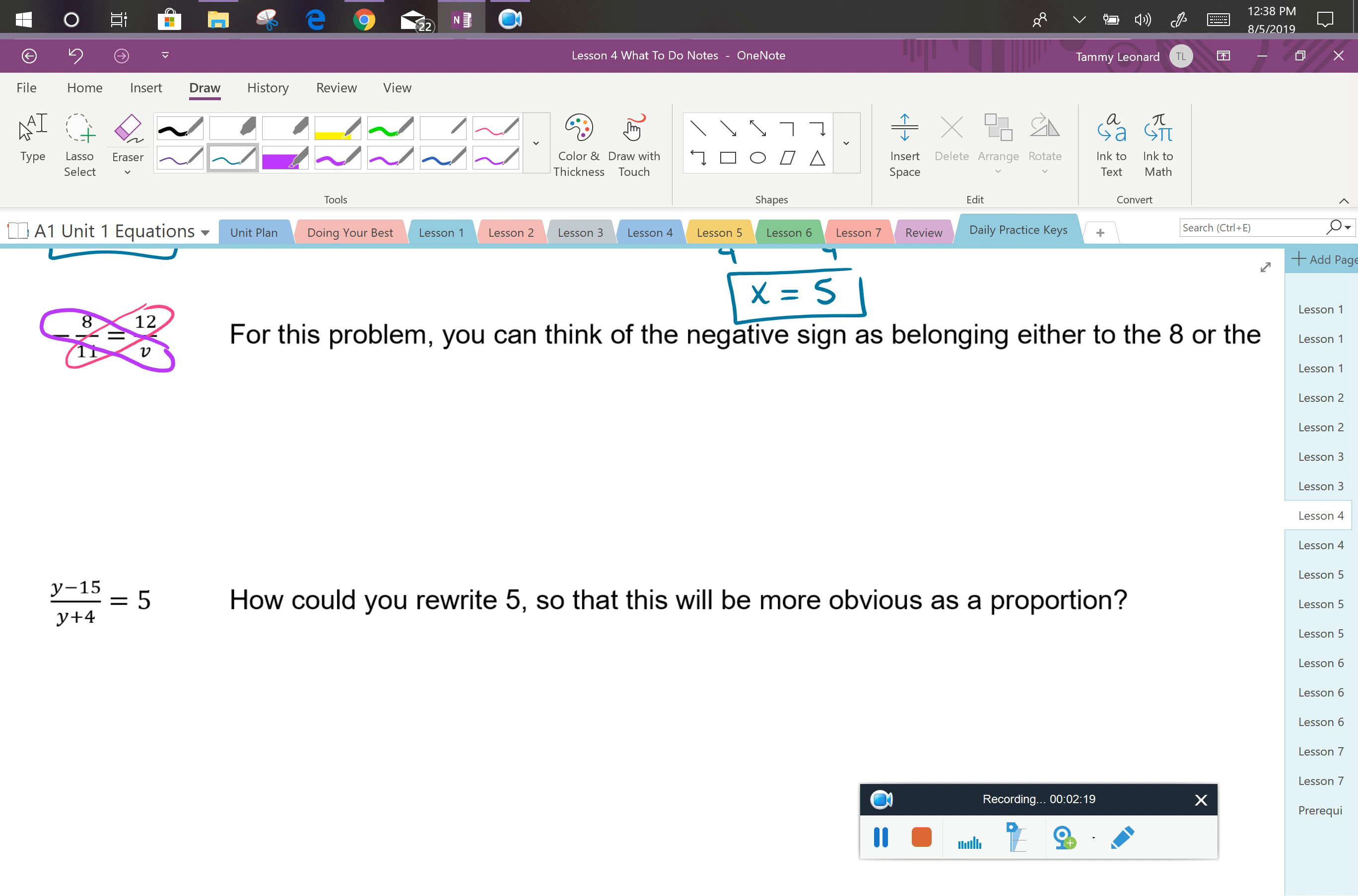So we start with 12 times 11, or 132, is equal to negative 8 times v, or negative 8v. Dividing both sides by negative 8, we see that 132 is not evenly divisible by 8, but they are both divisible by 4, so we can reduce this fraction. So we're going to have negative 33 halves is equal to v.